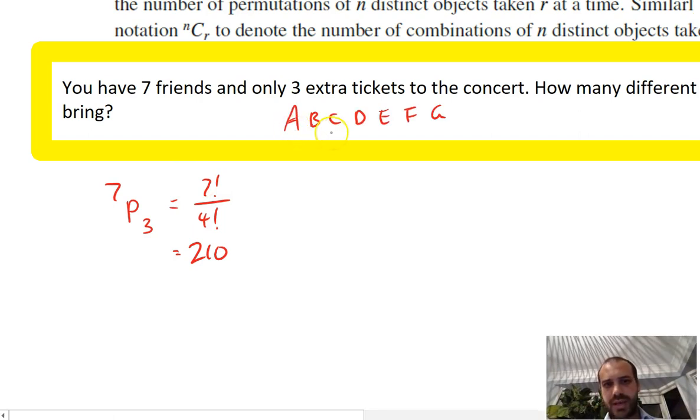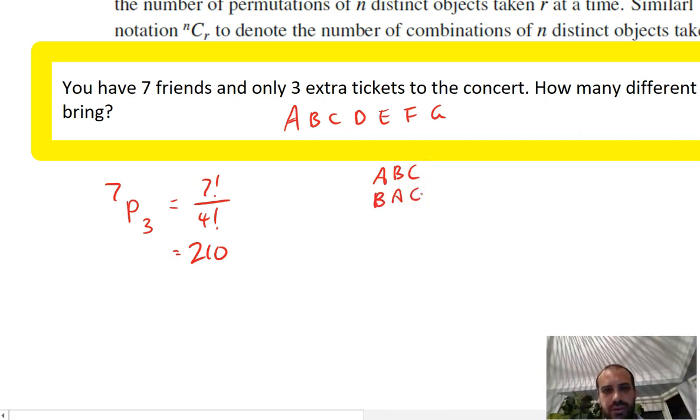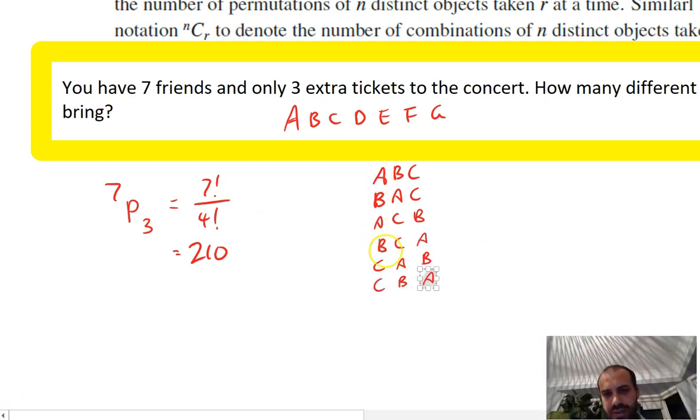If I call your friends A, B, C, D, E, F, G, this includes the groups A, B, C, for instance, but it also includes the group B, A, C, and it also includes the group A, C, B. There's going to be six different groups of A, B, C, B, C, B, A, C, A, C, B. I've actually counted this same group of three friends six times.